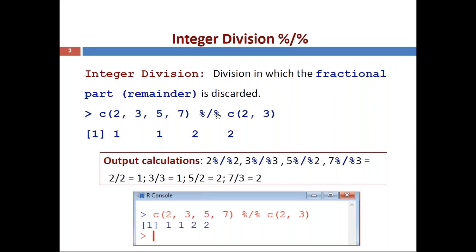Similar to what we computed with vectors for addition, multiplication, division, subtraction, and power, we will compute integer division using the percentage-slash-percentage symbol. We have two vectors: c(2, 3, 5, 7) integer division by c(2, 3). The order of calculation is the same as before — first element with first, second with second, then five with two and seven with three.